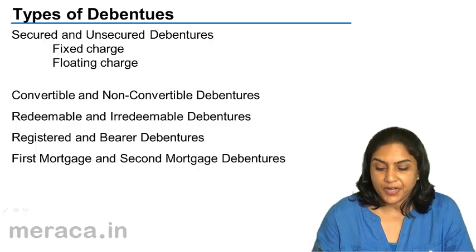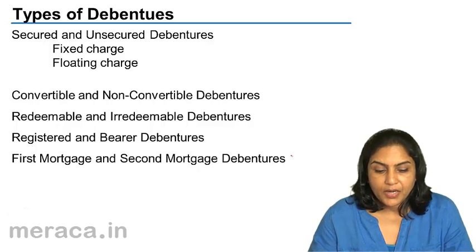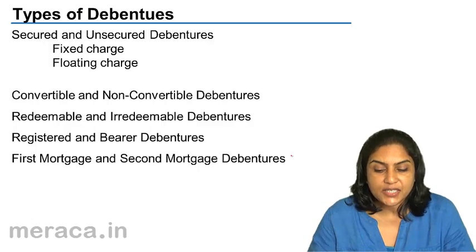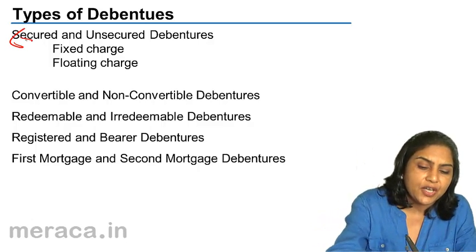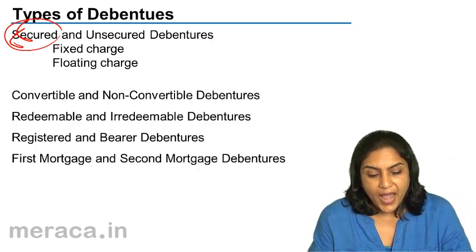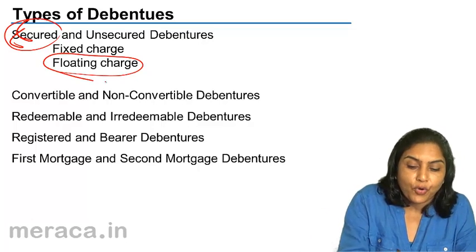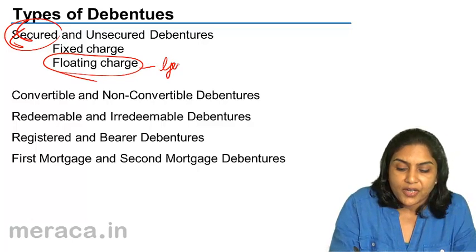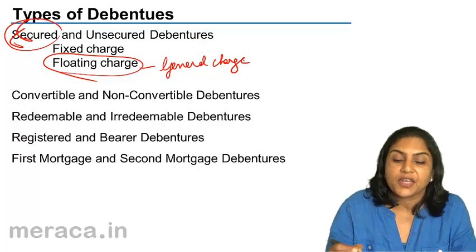What are the kinds of debentures? Debentures may be secured or unsecured debentures. Usually debentures are secured debentures, and they are normally secured by a floating charge, or what is called a general charge, on all the assets of the company.